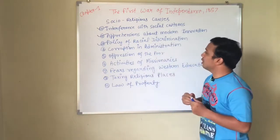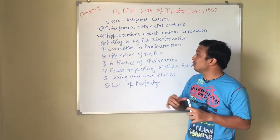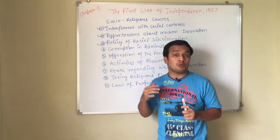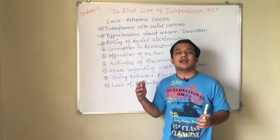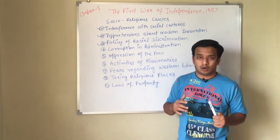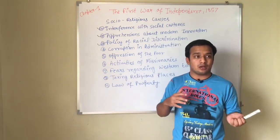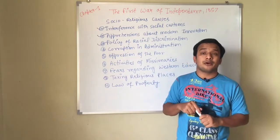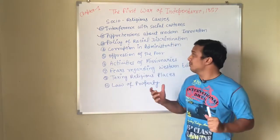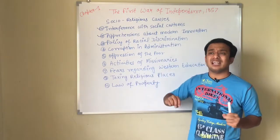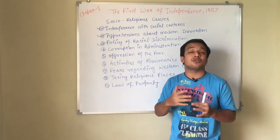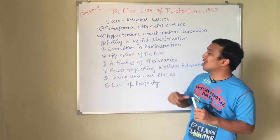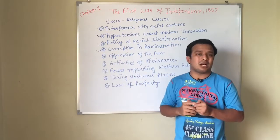Third is policy of racial discrimination. Britishers considered themselves as superior and Indians as inferior. In public offices, Indian officers were insulted. Muslims were considered cruel and inhuman. Basically, based on race, they considered themselves superior and Indians inferior. As a result, there was anger among the Indian masses.